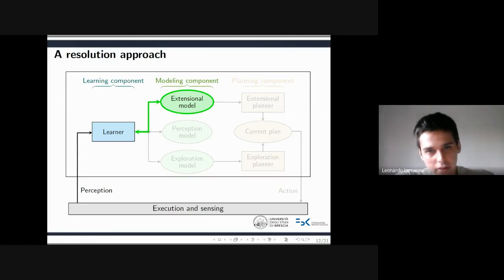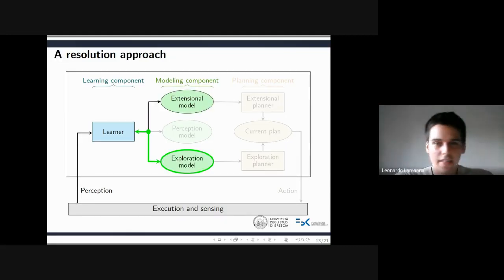To learn the extensional model, a random exploration strategy can be applied, however it doesn't scale up to large state spaces. Alternatively, the agent could use some prior belief about the environment. Following this idea, we suppose that such a belief is expressed through an exploration model, that is, a planning domain specified in PDDL.